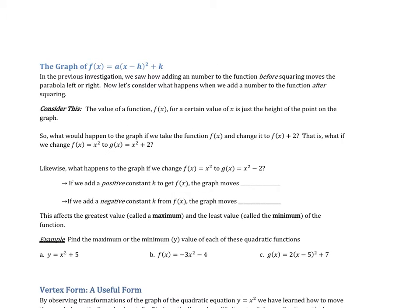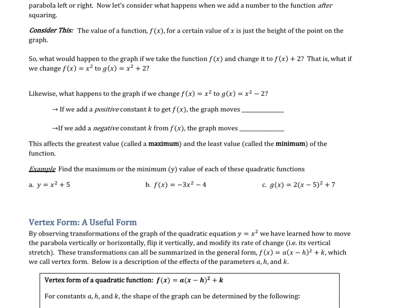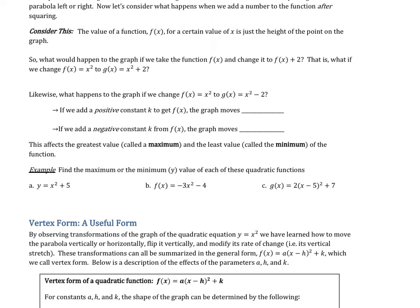Now let's go further and see what happens when we add outside the square — after squaring. We're headed toward a more complete vertex form. Consider that f(x) gives the height of the graph. If f(x) equals x squared, then f(3) is 3 squared equals 9. So the height is x squared. Watch what happens when we add 2 or subtract 2 from it.